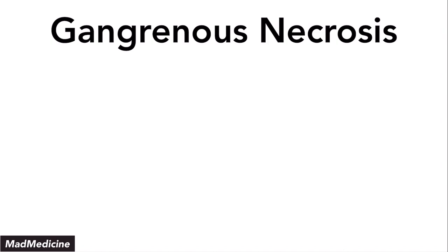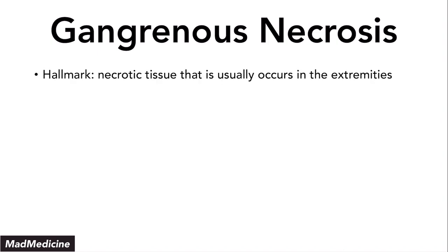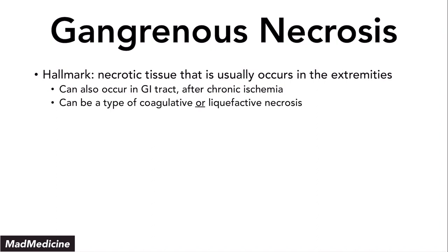Gangrenous necrosis is probably what you think about when you think of typical necrotic tissue. It is necrotic tissue that occurs in the extremities, and can also happen in the GI tract — especially with chronic ischemia or ischemic colitis. It is a type of necrosis that can be either coagulative or liquefactive, or a combination of both.